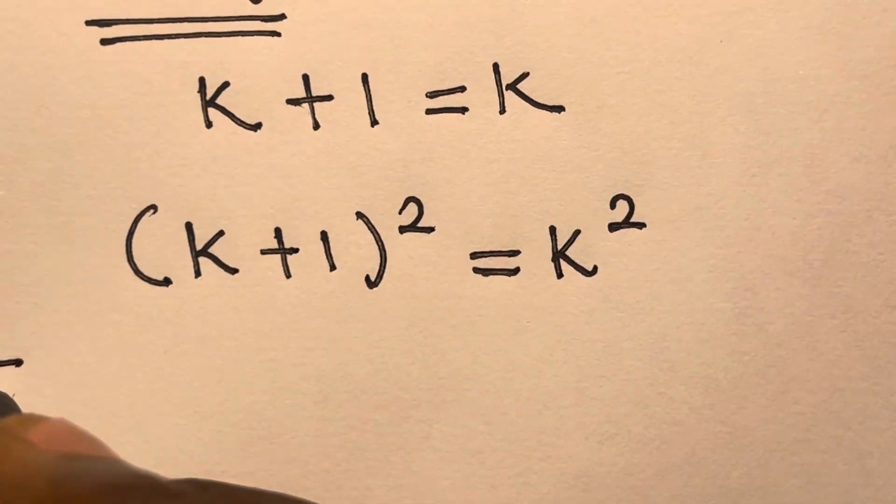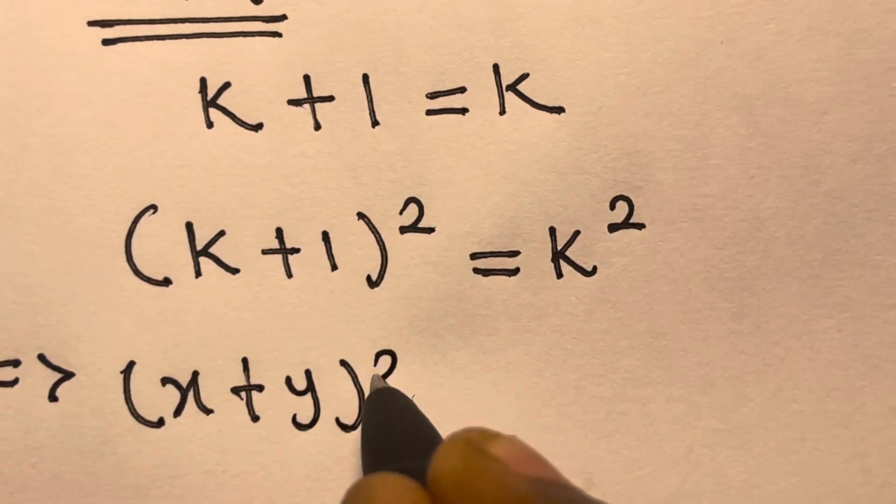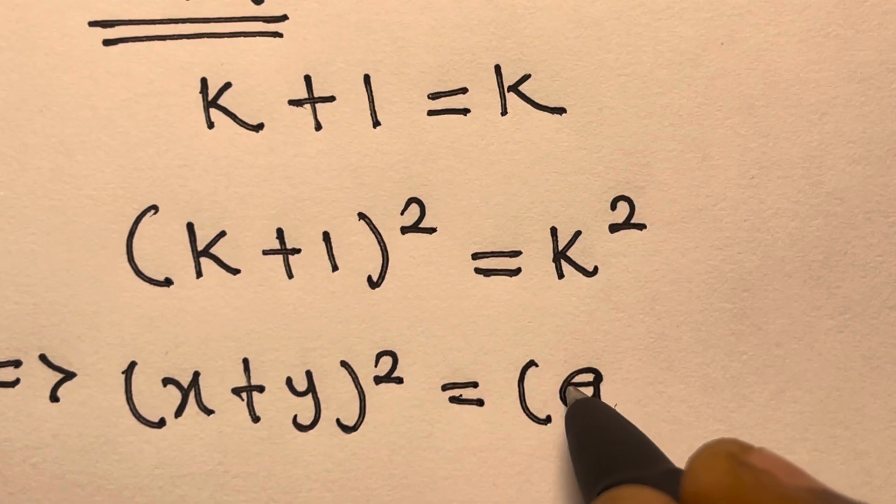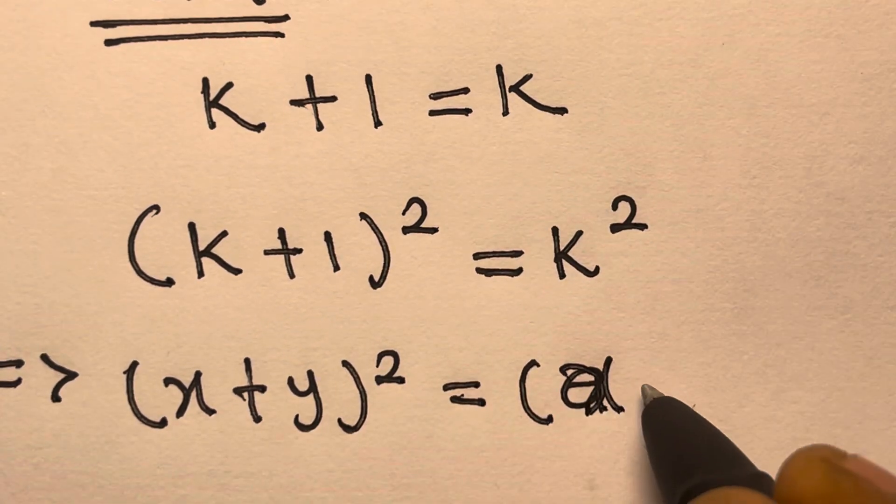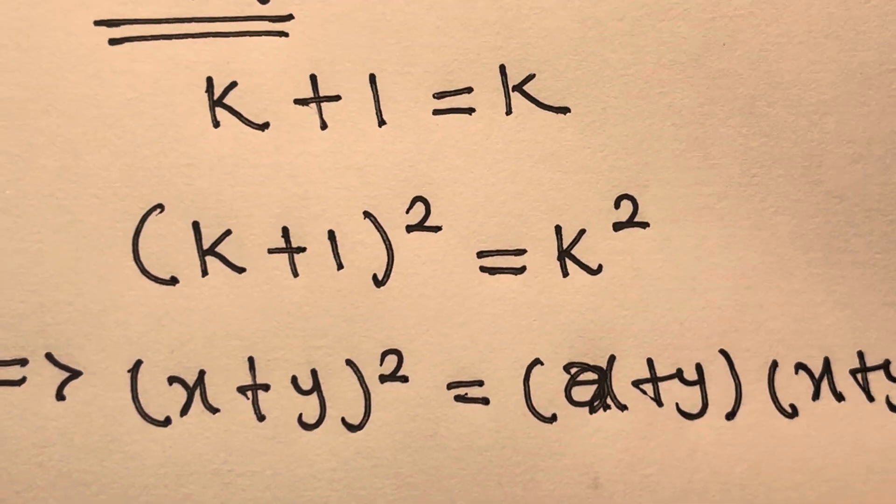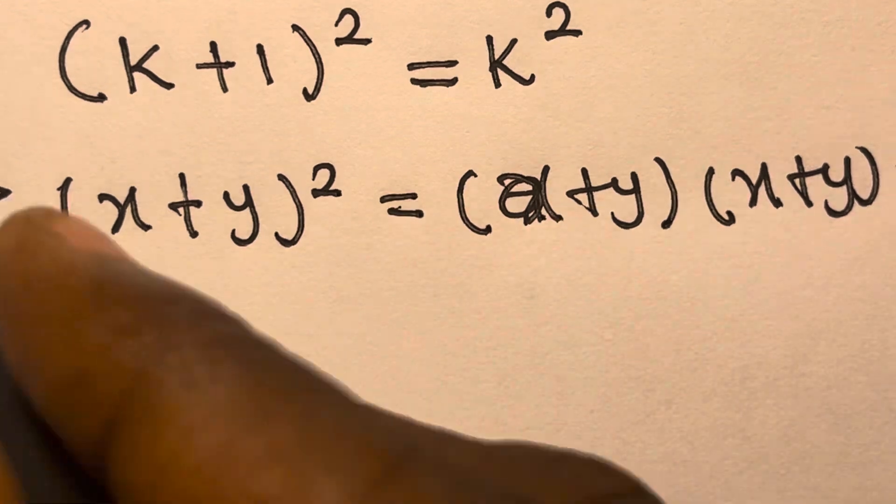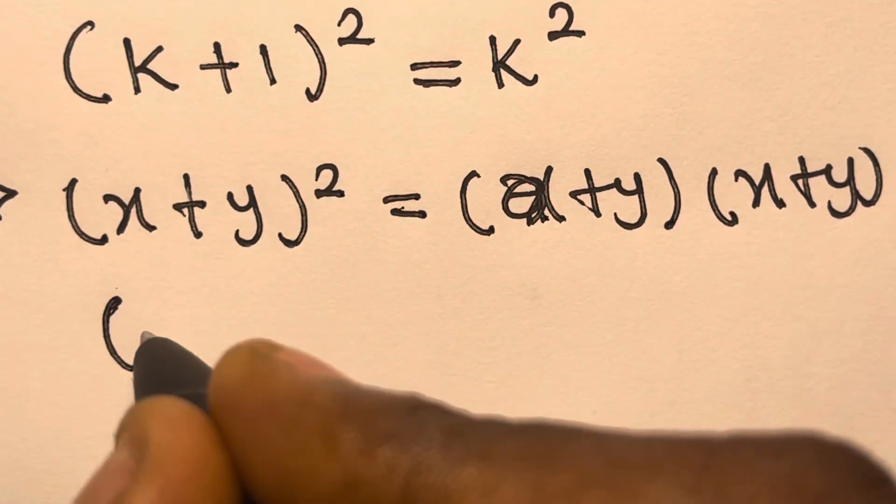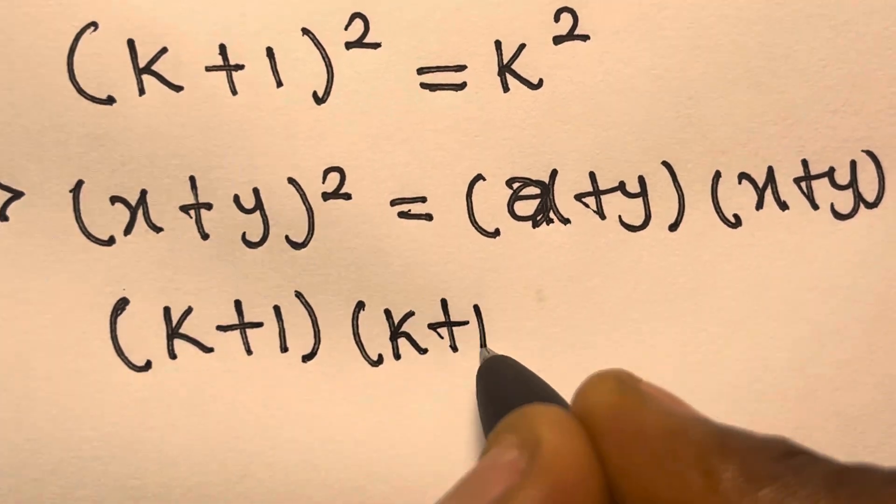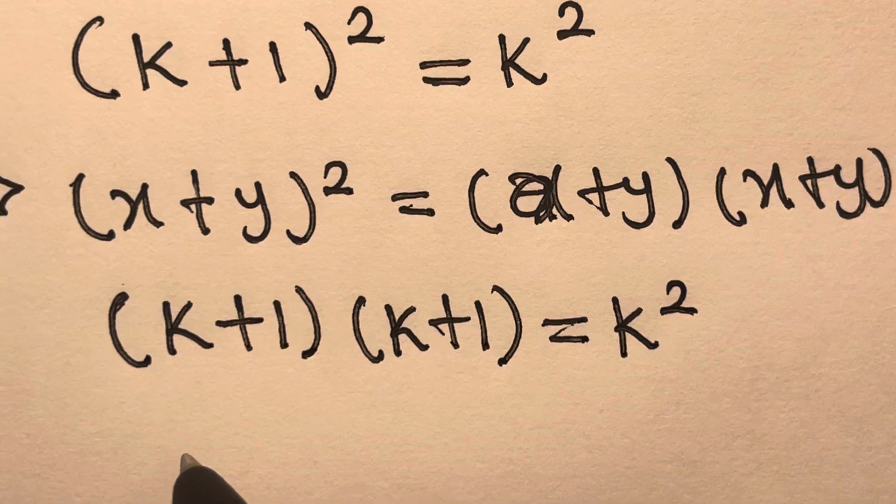So from here, let's recall that if you have x plus y square, this equals x plus y multiplied by x plus y. So applying this to the above, we have k plus 1 multiplied by k plus 1. This equals k square. Right?